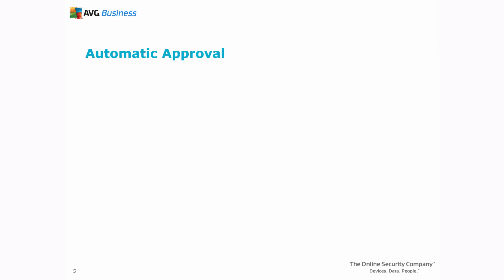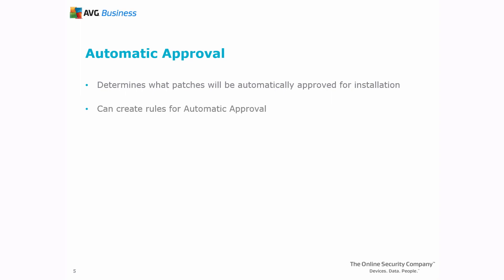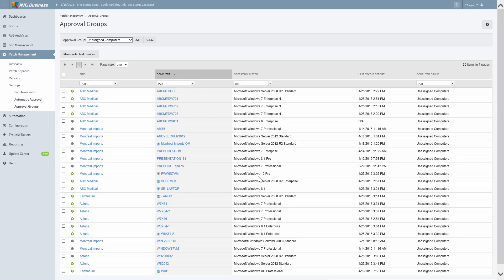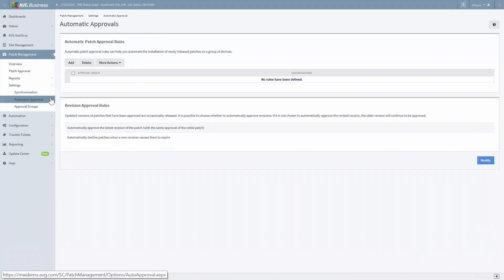Finally, we'll configure Automatic Approval Options. Automatic Approval Options determine what patches will be automatically approved for installation. While you may want to manually approve certain patches as they become available, there may be some patches that you always want to install immediately without the need for manual approval. In the Automatic Approval step, you can create rules for Automatic Approval by specifying Patch Classifications and Approval Groups. Under Patch Management, select Automatic Approval and click the Add button to create a new Approval Rule.